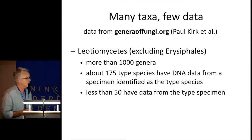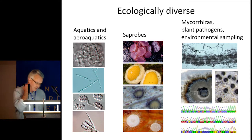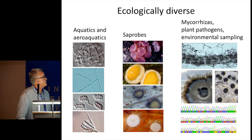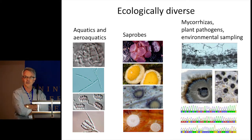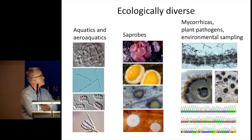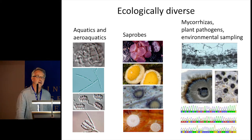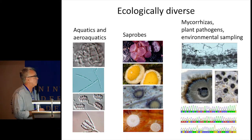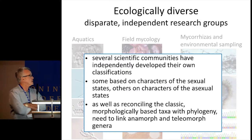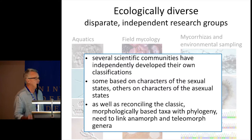The next scene-setting slide: these things are ecologically very diverse. They include many aquatic and near-aquatic hyphomycetes, little cup fungi found on fallen leaves and fallen twigs in forests, saprobic things, mycorrhizas especially of ericaceous plants, plant pathogens like the powdery mildews, Sclerotinia, Botrytis, and Cadophora-like fungi that are pathogens of vascular tissues. They also turn up frequently in environmental sampling projects.